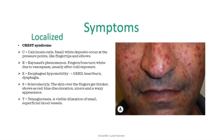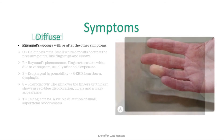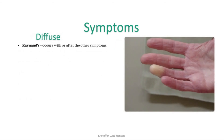T stands for telangiectasia. This is a condition where the small and superficial blood vessels get dilated, causing a lot of visible red spots, especially in the face. And now to the diffuse variant. Take note that Raynaud's occurs here as well, but in the localized version it typically precedes the other symptoms, while in the diffuse variant it occurs with or after the other symptoms.